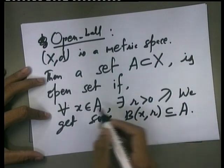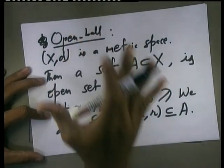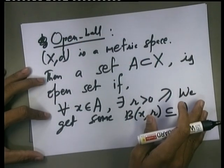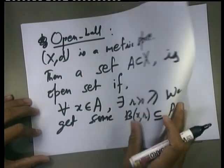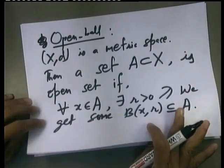If this particular property happens for every x in the set, then we say all such points are interior points, and the collection of all interior points gives rise to an open ball.